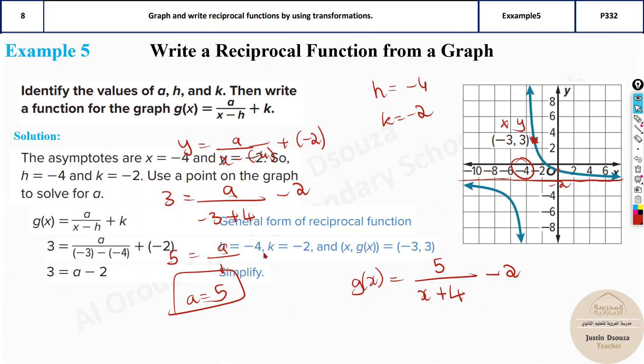So this is your final equation. You can see all these steps are there. And the final equation is 5 by x plus 4 minus 2. That's it. That's how we do this.